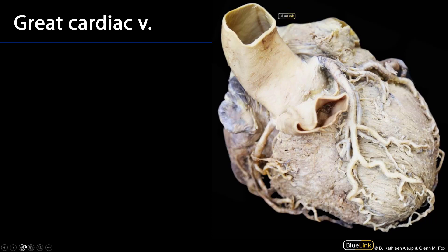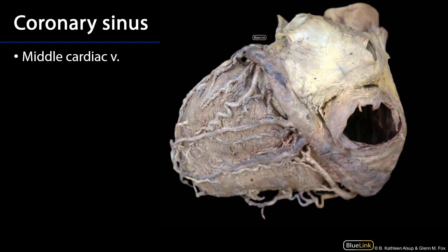You can see the great cardiac vein ascending up. Typically it's more superficial than the anterior interventricular branch, but it's occupying that same general region of the anterior interventricular sulcus. So it will share a sulcus with the anterior interventricular branch. Now as we wrap around into the coronary sulcus, we're on the posterior inferior portion of the heart.